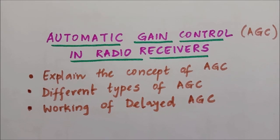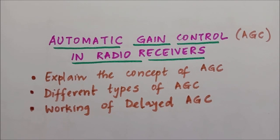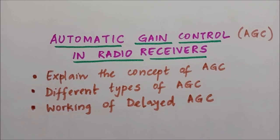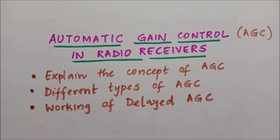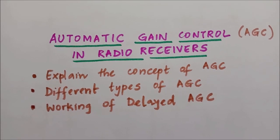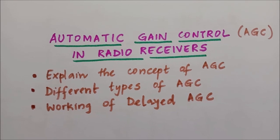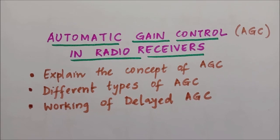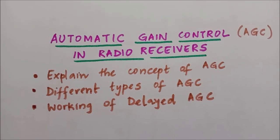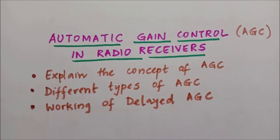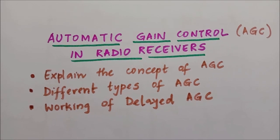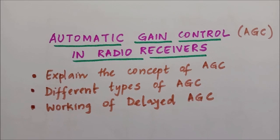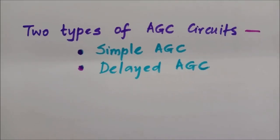I shall explain the need for such a circuit. All of us might have tried to tune to various stations using a radio receiver. There are cases where the signal strength varies from station to station. This is where the AGC mechanism comes into picture — irrespective of the channel we are tuned to, the AGC mechanism ensures that the receiver output is maintained at a constant level.